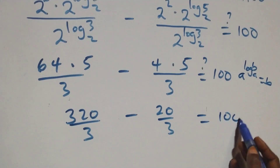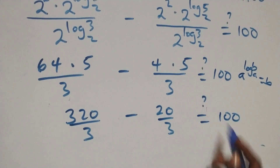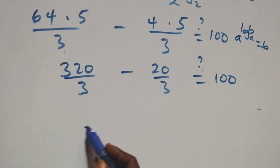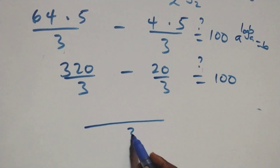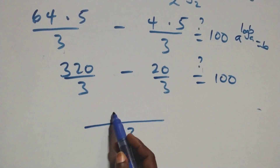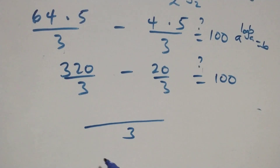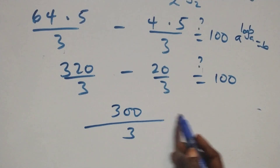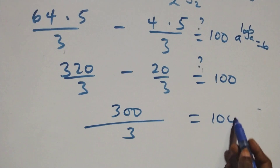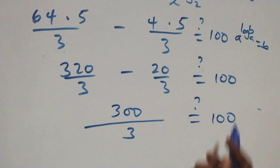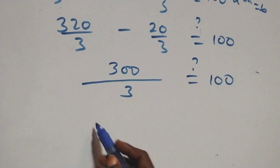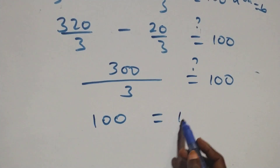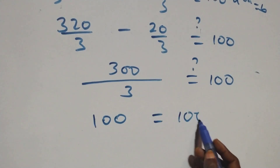Then we bring this together as one fraction: LCM is 3, giving 320 minus 20 over 3, which equals 100. And 300 over 3 is 100, which is equal to 100 on this side.